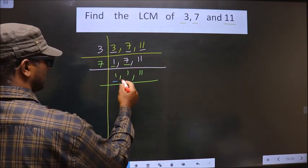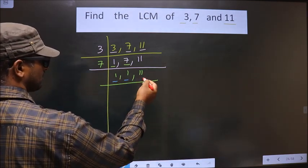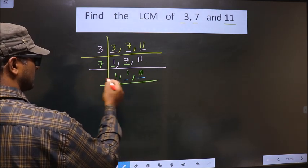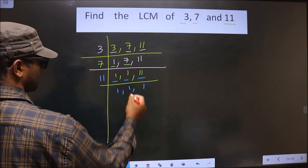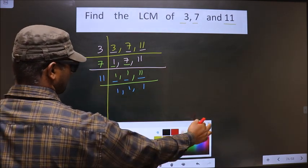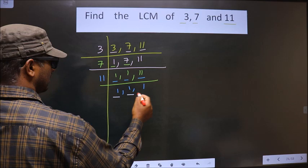So now here we got 1, here we got 1. Focus on the next number that is 11. 11 is a prime number so we take 11 once. So now we got 1 in all the 3 places.